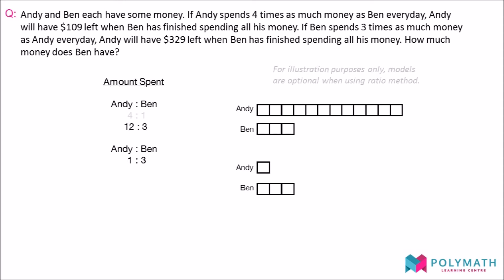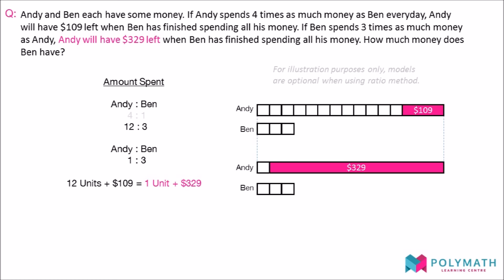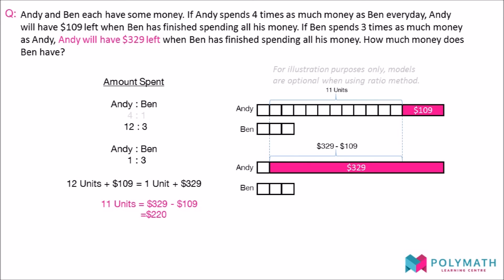Take note that the ratios represent the proportion of the amount spent, not the proportion of what Andy has. By adding what Andy would have left to the amount that he would have spent, we can derive the two expressions that represent the money Andy has. After spending 12 units of money, Andy will have $109 left, so we add $109 to 12 units to form the left-hand side of the expression. If Andy spends one unit of money, he would have $329 left, so we add $329 to one unit to form the right-hand side of the equation. Looking at this equation, we can determine that the difference between 12 and one unit is equal to the difference between $329 and $109. Thus, 11 units are equal to $220, and one unit is equal to $20.